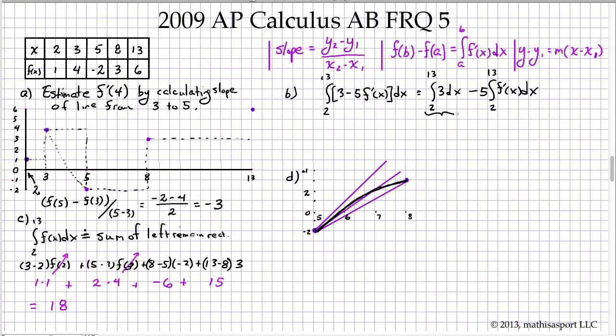This sometimes troubles students, but if you think about it, it's saying what is the signed area as I go from 2 to 13 of the 3 function. The 3 function is simply a horizontal line at 3, so this is nothing more than asking me to find the area of a rectangle that is 11 by 3, and so that area is 33.